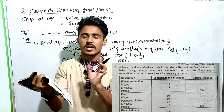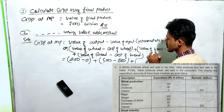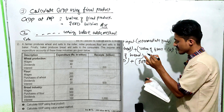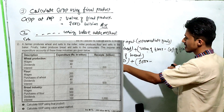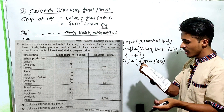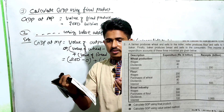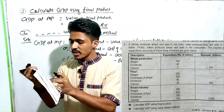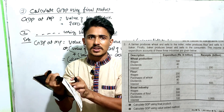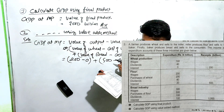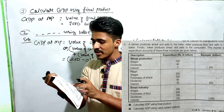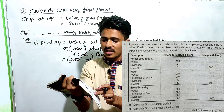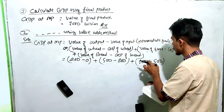If you have $2,000, then value of output minus input gives $2,000 for that stage. For the bread industry, $1,000 minus $500 equals $500. Adding up across the farmer, miller, and bread industry stages gives the total GDP at MP through the value-added method.